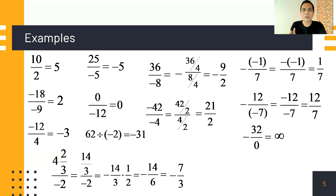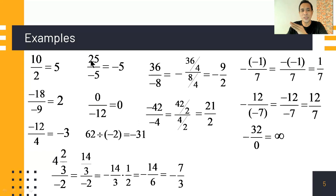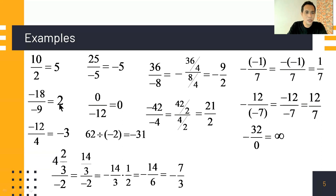To check our answers, we use multiplication, since division is the inverse of multiplication. For example: 10 over 2 equals 5 — check: 5 times 2 is 10, correct. For 25 over negative 5 equals negative 5 — check: negative 5 times negative 5 is positive 25, correct. For negative 18 over negative 9 equals 2 — check: 2 times negative 9 is negative 18, correct.